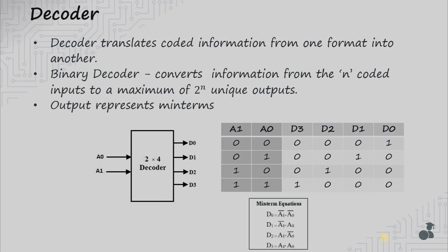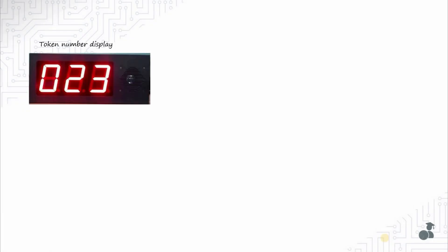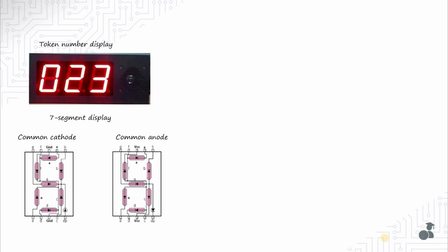Let's see a real world application of a decoder. Suppose you want to write code for a token display system as seen in banks. These display systems have seven segment LEDs, which may be of common cathode type or common anode type. In the common cathode type, all LEDs share a common negative terminal connected to ground, and to glow any LED we need to give a logic high or VDD to the other terminal. In common anode, all LEDs share a common positive terminal connected to VCC, and to glow any particular LED we need to give a logic low at the other terminal.